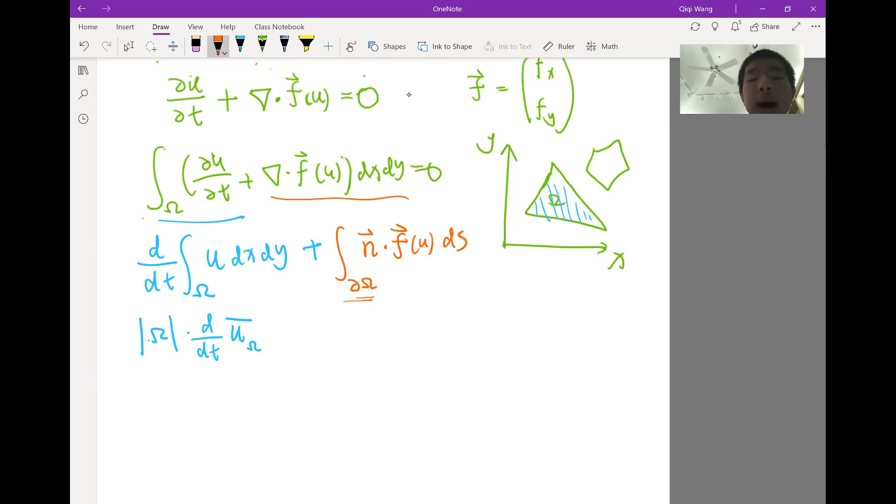The integral of a divergence is equal to the boundary integral of the vector in the normal direction. So this partial Omega is actually the boundary, and the n is the unit normal pointing outward from the boundary. So integral of a divergence is equal to the boundary integral of the normal flux. So that, again, links to finite volume very well. Because now, instead of approximating the values of the function or the value of the flux on the grid points, we're going to be approximating the average value of the flux across these kind of boundaries.